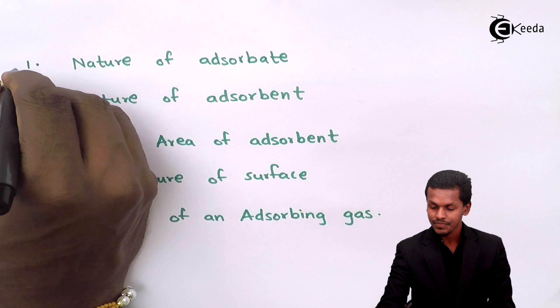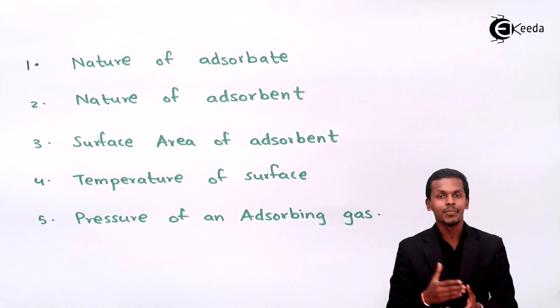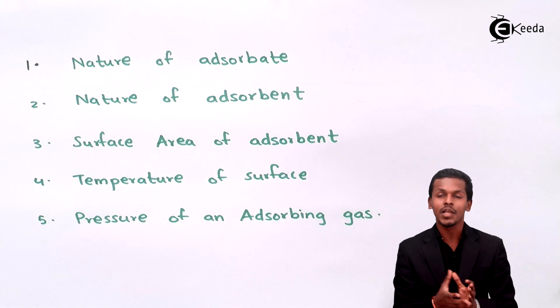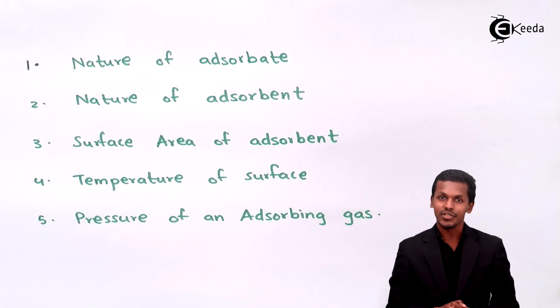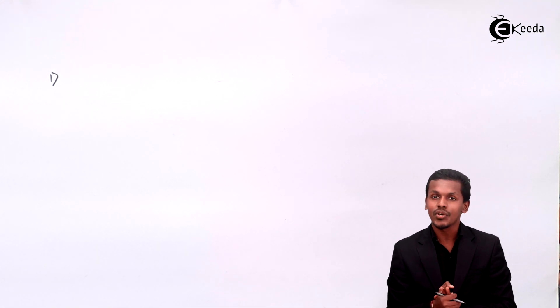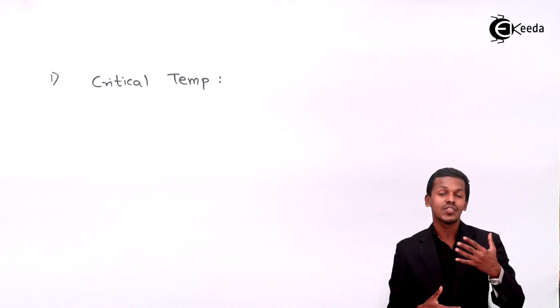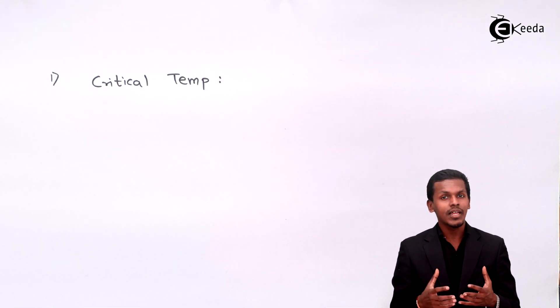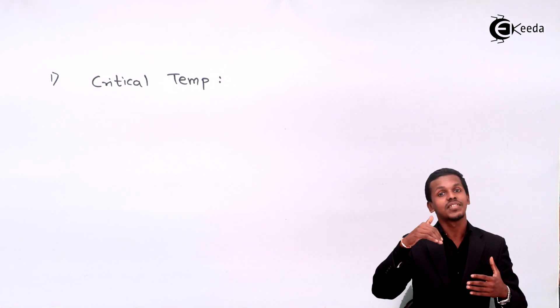The first factor is the nature of the adsorbate. The adsorbate is the substance deposited on the surface of the adsorbent — in this case, we are discussing a gas. When we talk about the adsorbate, we are talking about a gas that has a higher critical temperature. Critical temperature is the temperature above which a gas cannot be liquefied.